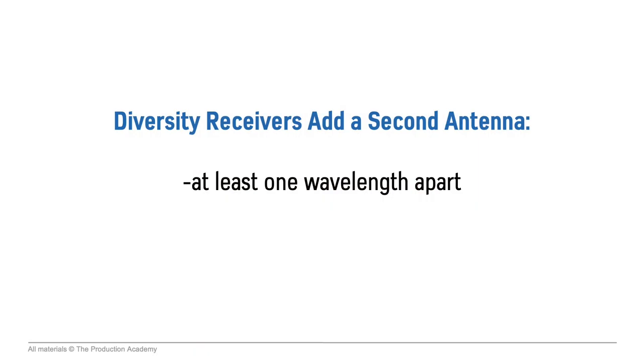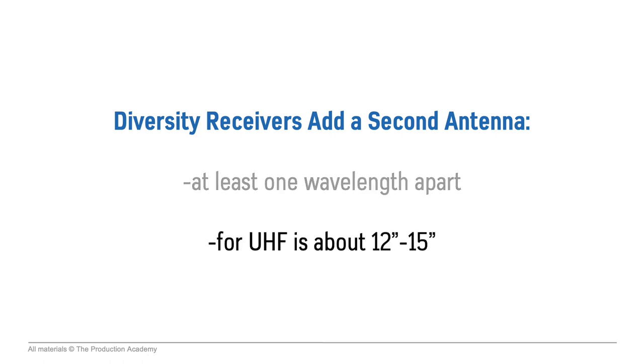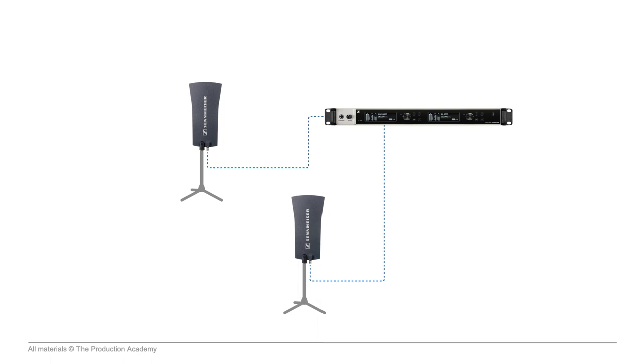This is pretty random and hard to predict, and depends on the position of the antenna on stage — which is usually moving around — and the size and shape of the room and the exact location of the other antenna. So with diversity receivers, we add a second antenna, which should be at least one wavelength apart. For UHF, this is about 12 to 15 inches, but around 10 feet is often ideal, depending on the size of the stage. Then the receiver can use both antennas to create a more secure connection by using the stronger audio signal from either antenna at any given time.